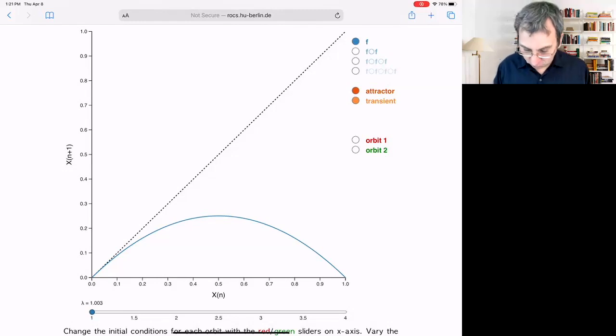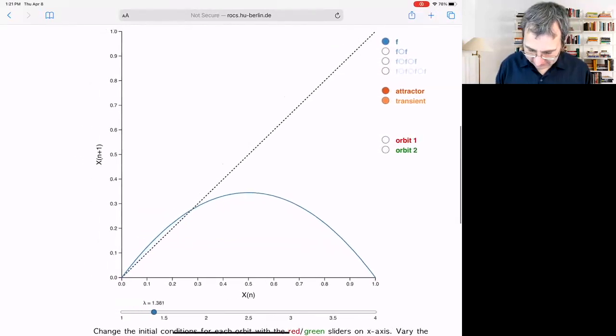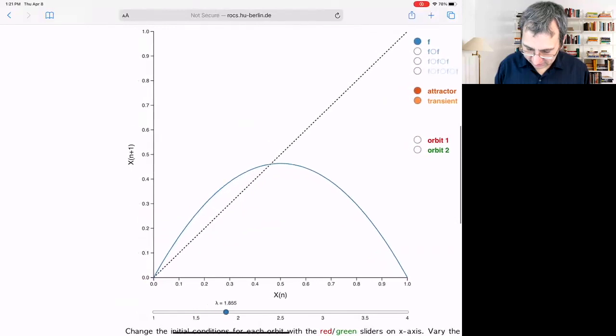Bifurcation happens at one, the bifurcation to a stable point that's not zero. As you adjust r, you're raising the height of this.